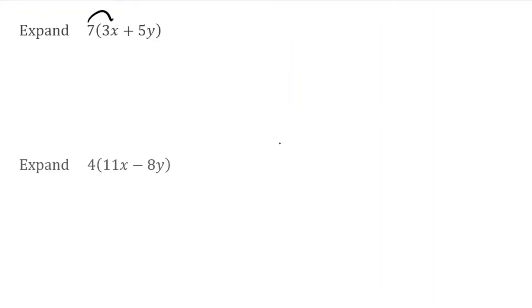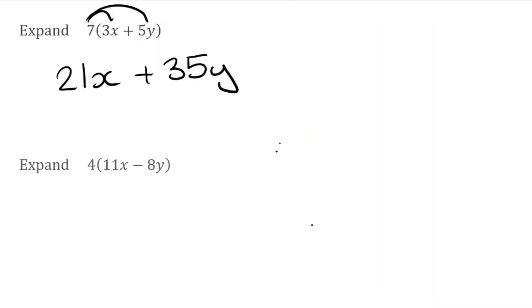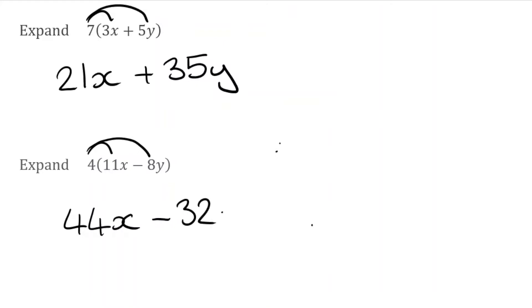For this next question we've got 7 multiplied by (3X+5Y). 7 times 3 is 21, so we've got 21X. And then 7 multiplied by 5Y — 7 times 5 is 35 — so we're going to have positive 35Y. For the following question we have 4 multiplied by (11X-8Y), which is 44X, and then 4 multiplied by negative 8Y gives us minus 32Y.